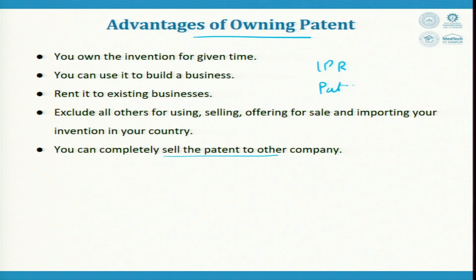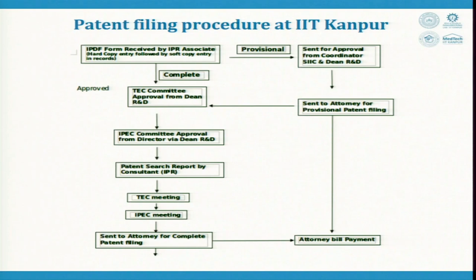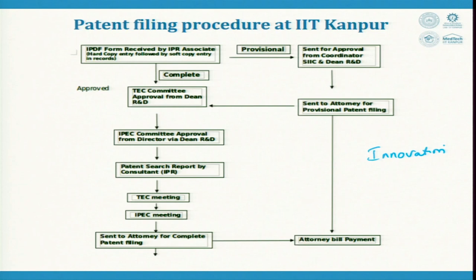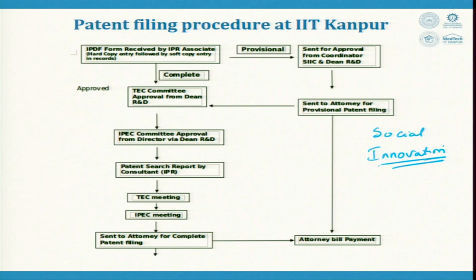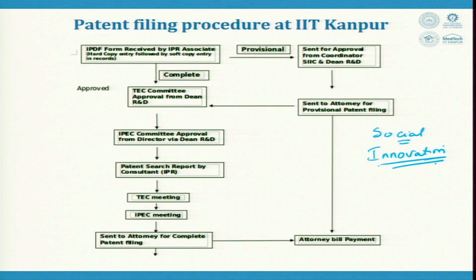At IIT Kanpur, a specific procedure is laid out for filing a patent. It is very important to have patent protection in innovation. Here, an IPDF form is received by IPR associates. They handle two types: a complete form and a provisional form. The provisional form is sent for approval through a coordinator and the dean's signature, then sent to the attorney for a provisional filing.